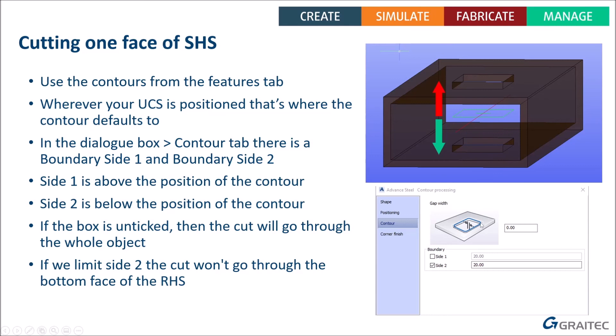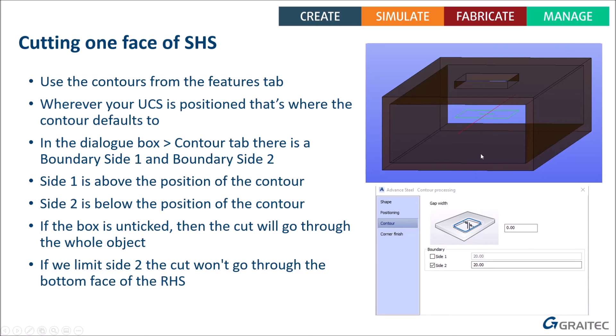By default the cut has no boundaries — it's infinite in both directions, cutting through both sides. To limit it, tick the box for one direction and put a value in — for example, tick Side Two and enter 20mm, so it only goes 20mm downward and stops before reaching the bottom face of the SHS. You can put zero to definitely prevent cutting, or even negative numbers to move the boundary in the opposite direction — for example, minus 20mm would move the bottom boundary 20mm upward. Just play with those boundaries, including negative numbers, to cut only one side of your box, tube, or similar section.